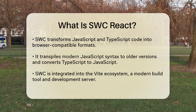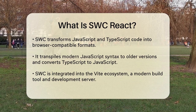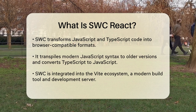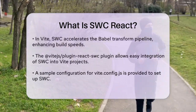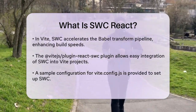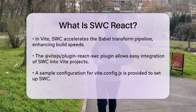In the Vite ecosystem, which is a modern build tool and development server, SWC plays a crucial role. Vite uses SWC to perform the Babel transform pipeline much faster, which is particularly beneficial for larger React projects. This results in faster build times and a smoother development experience.